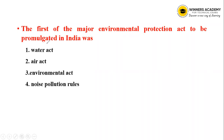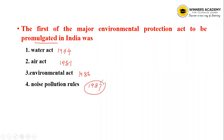Next question: The first of the major Environment Protection Acts to be promulgated in India. Water Act is 1974, Air Act is 1981, Environment Protection Act is 1986, Noise Pollution in 2006. In 1987, there was an amendment — the Air Act in 1981 had a pollutant added in 1987.